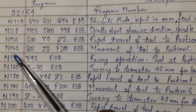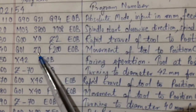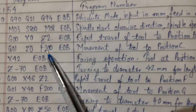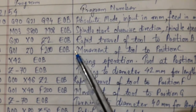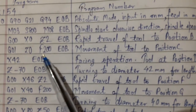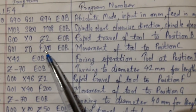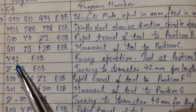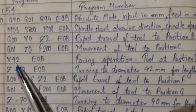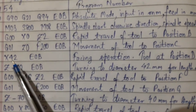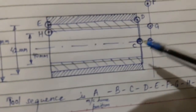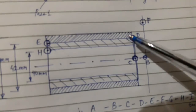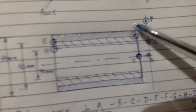Sequence N140 uses G01 with Z equal to 0 and F equal to 200 to bring the tool to the face of the job for the facing operation. The tool is now at position C. Then X42 is commanded so the tool moves from center out to position D, where it has reached a diameter of 42 mm and the facing operation is complete.